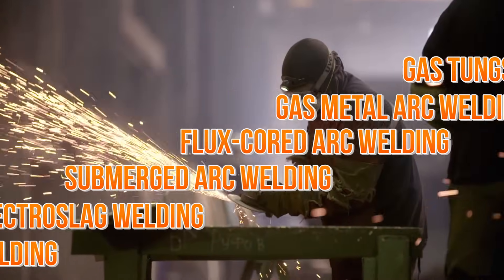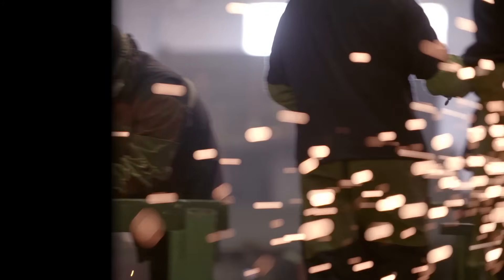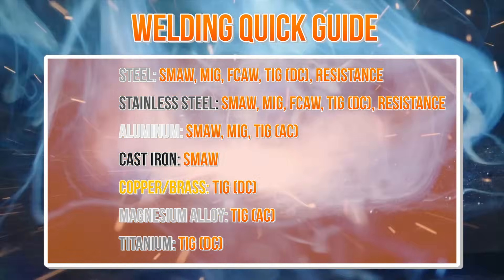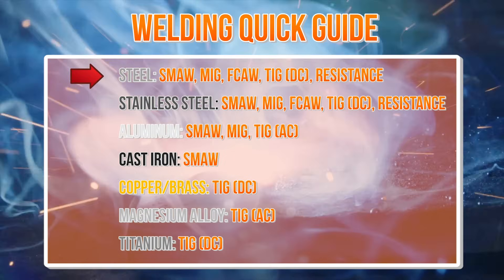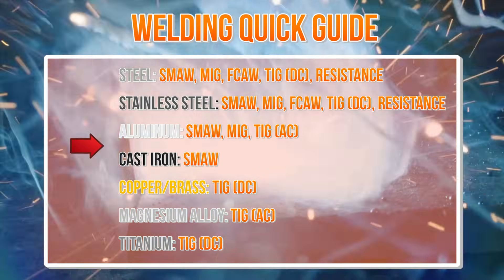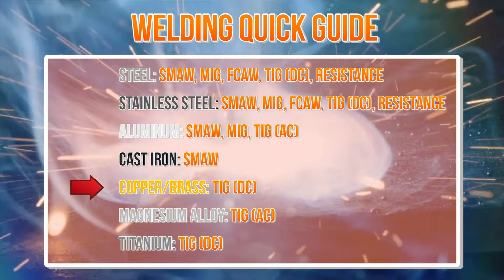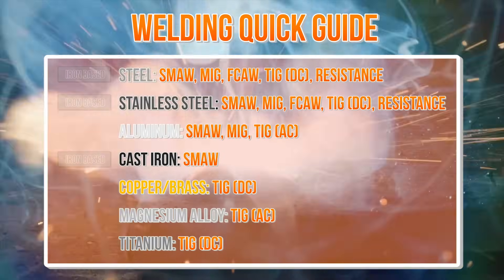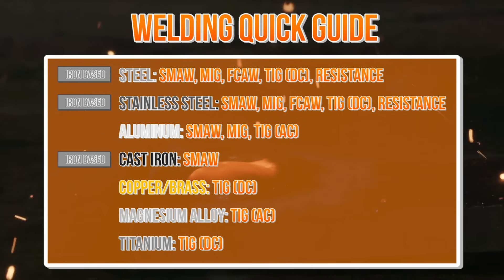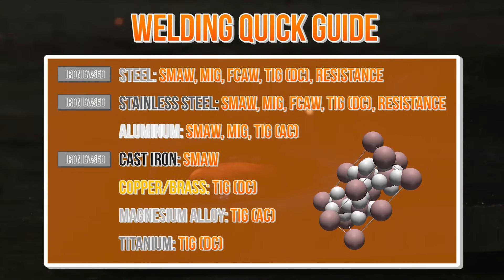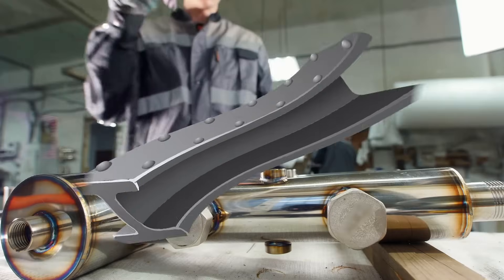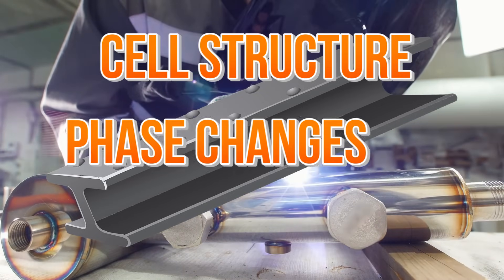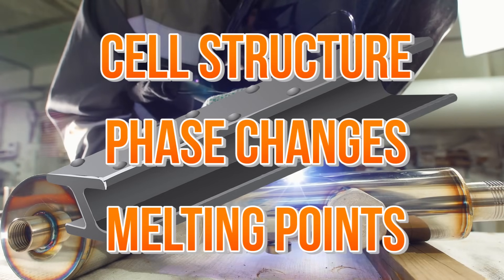Now that we have some background on all of the various welding techniques, we can begin to understand how to weld various metals. Instead of taking a long time to explain why each welding technique can weld each certain material, we'll pop a quick guide on the screen and go through it pretty fast. Steel can be used with these techniques, stainless steel with these, aluminum with these, cast iron with this one, copper and brass with TIG, magnesium alloy with TIG, and titanium with TIG as well. As you can probably notice, iron-based metals can be welded with various techniques, but other metals can't, because they have less compatible cell structures and take specific techniques to weld. The reason behind steel's wide range of techniques and other metals' specific techniques has to do with cell structure, phase changes, melting points, and many other factors.